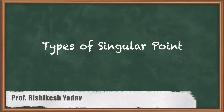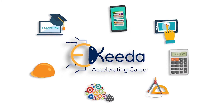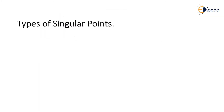Hello friends. In this section we are going to see different varieties of a singular point. Now in the last session we have seen the concept of singular point. A singular point is defined as an equilibrium point in which the derivative of the state equation or state variable is always equal to zero. So that is the concept of singular point.